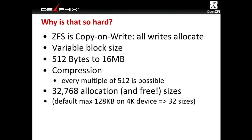ZFS has variable block size. Depending on the size of your file and your settings, you could be allocating a block that's 512 bytes or all the way up to 16 megabytes. We also support compression, which means that the block could be any multiple of 512 — so it could be 7 kilobytes, 32.5 kilobytes, or 1.275 megabytes. All these different allocation sizes mean that fragmentation can become much more of a problem. There are actually 32,000 possible different sizes of blocks we might need to allocate.